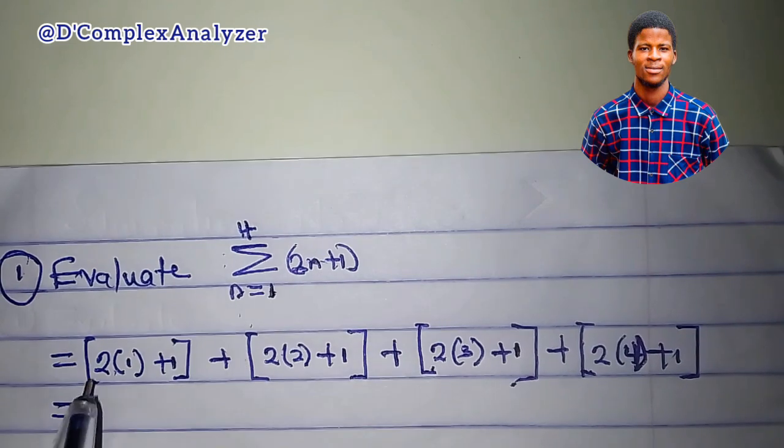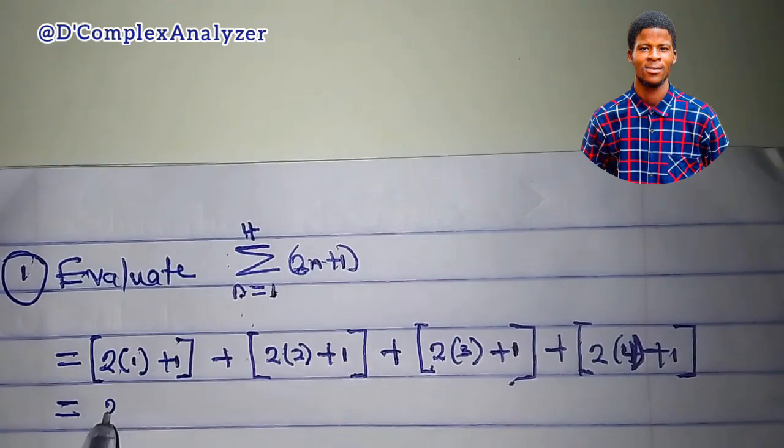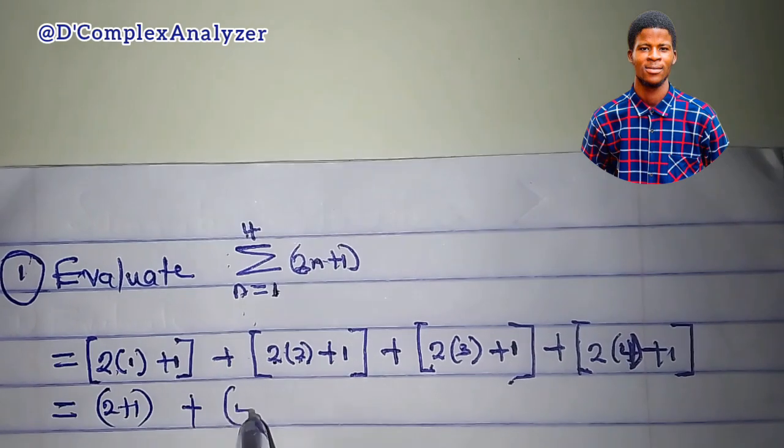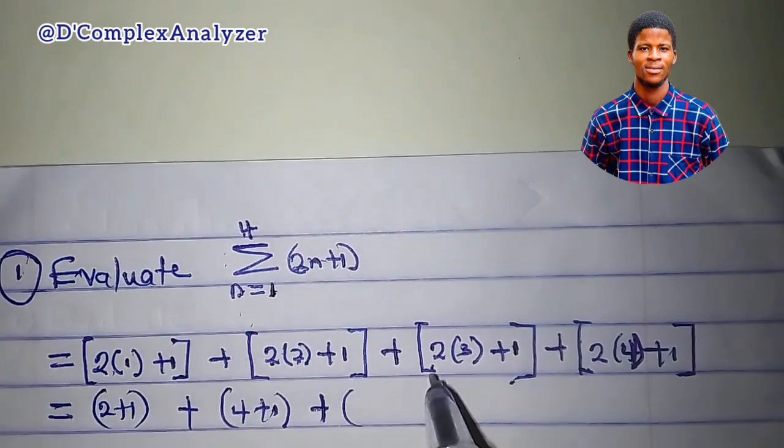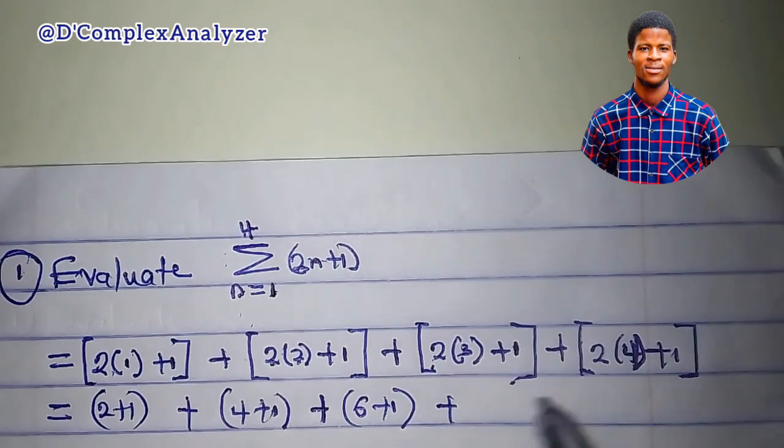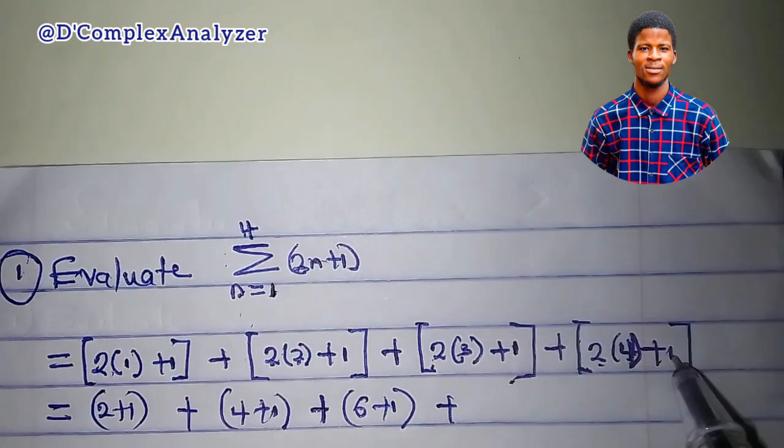Let's go ahead. 2 times 1 is 2, so we have 2 plus 1, plus 2 times 2 is 4, we have 4 plus 1. 2 times 3 is 6, we have 6 plus 1. 2 times 4 is 8, that is 8 plus 1.